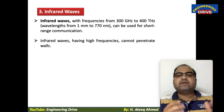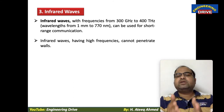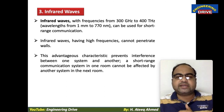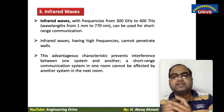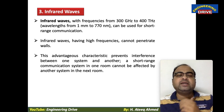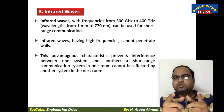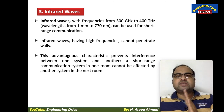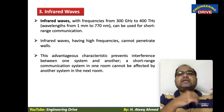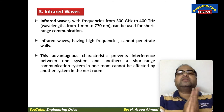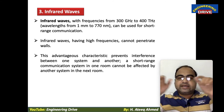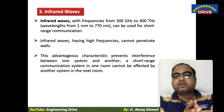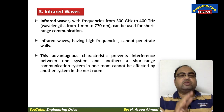Infrared waves with their high frequencies cannot penetrate walls. This advantageous characteristic prevents interference between systems — a short-range communication system in one room cannot be affected by another system in the next room. So if two devices are communicating using infrared in one room, there will be no interference from an adjacent room, making infrared waves very advantageous for short-range communication.